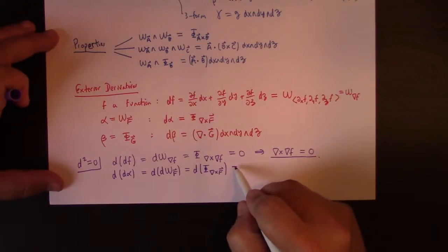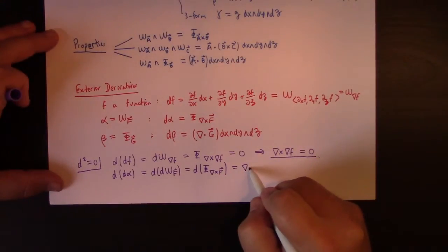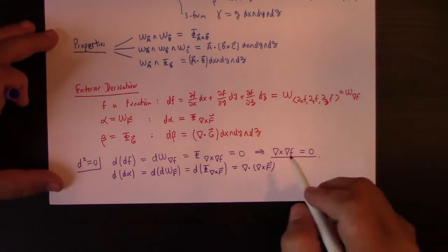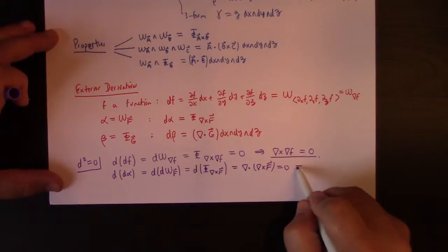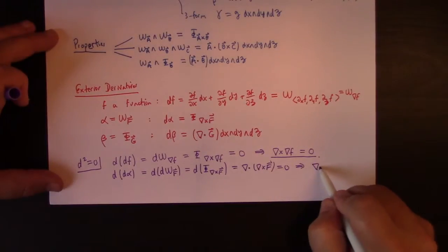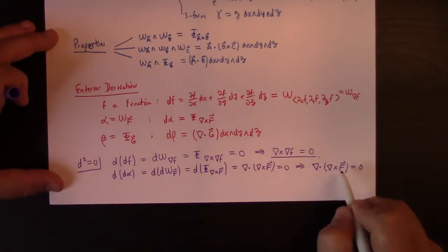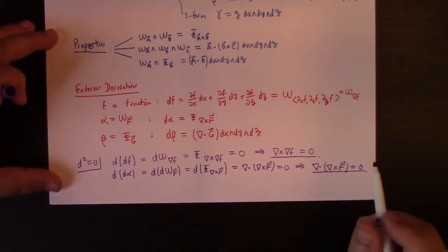And so, that would be d of the flux form of the curl of f. All right, and so that is the divergence of curl of f. But, again, d squared is equal to zero, so that's equal to zero. That implies that the divergence of the curl is zero. Also, an important identity from vector calculus.